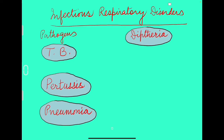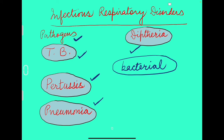Some infectious respiratory disorders — communicable diseases, respiratory in nature — which are caused by pathogens. It could be bacteria or a virus causing the disease. TB (tuberculosis), pertussis (whooping cough), pneumonia, and diphtheria — all these are caused by bacteria. They are bacterial diseases, acute disorders, which can infect a healthy person from an infected one.